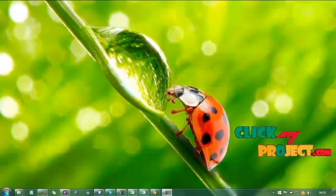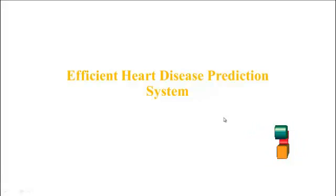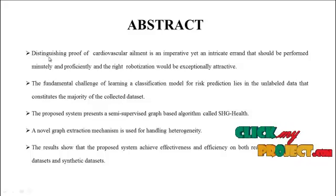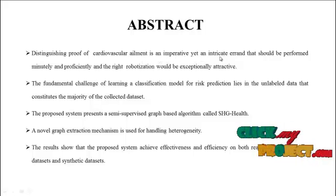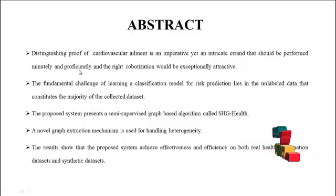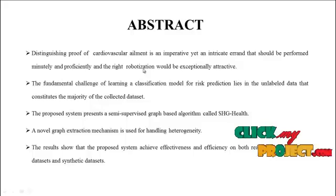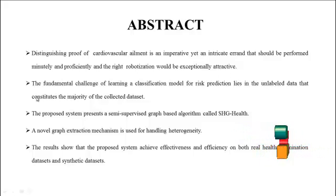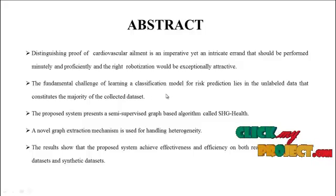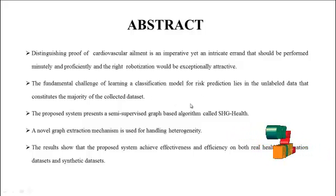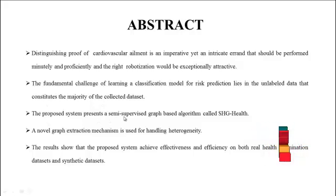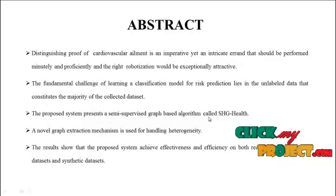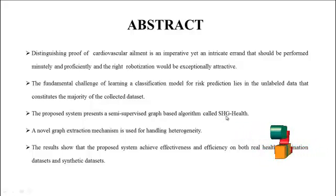Welcome to ClickMeProject.com. This is our project title for the efficient heart disease prediction system. The identification of cardiovascular elements is an important yet complex task that should be performed minutely and efficiently, and the right automation would be exponentially attractive. The fundamental challenge of learning a classification model for risk prediction lies in the unlabeled data that constitutes the majority of collected datasets. The proposed system presents a semi-supervised graph-based algorithm called SCH Health.